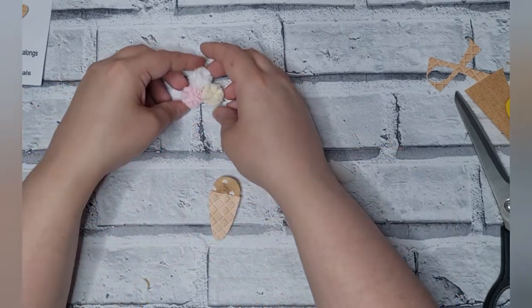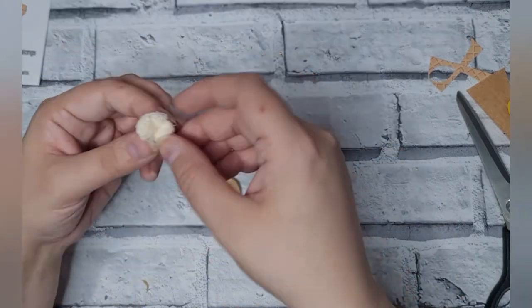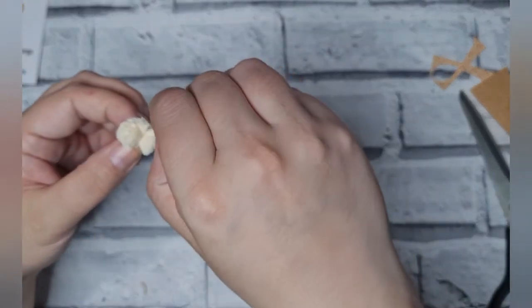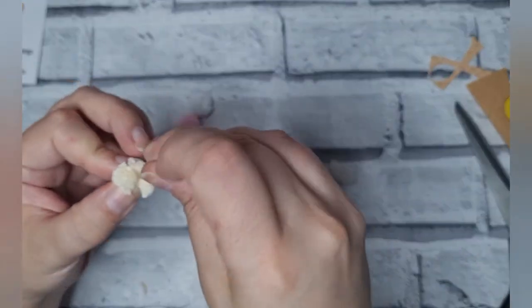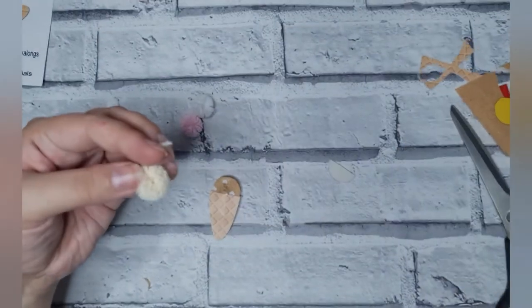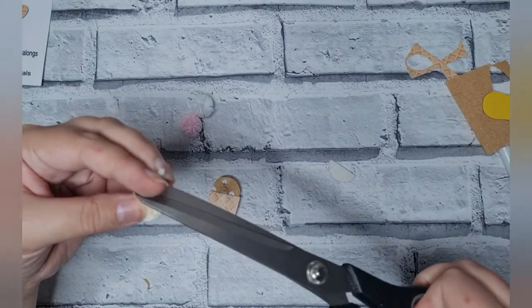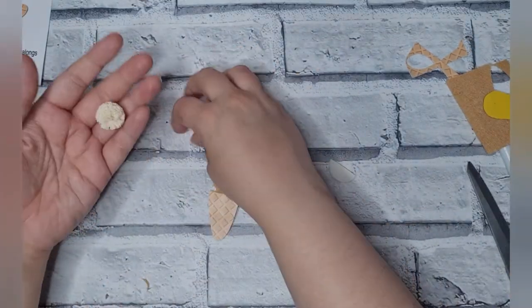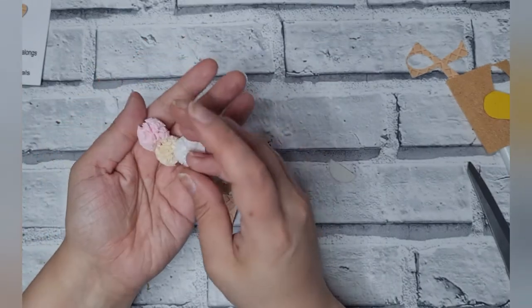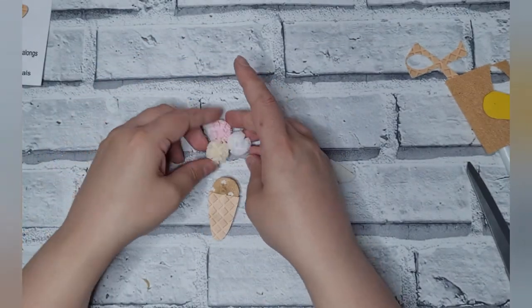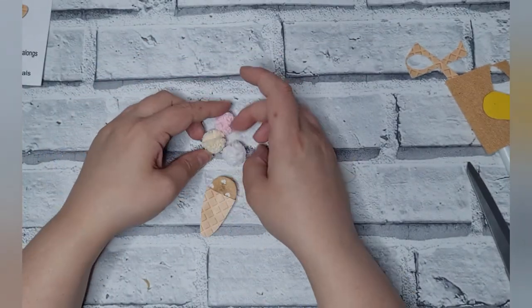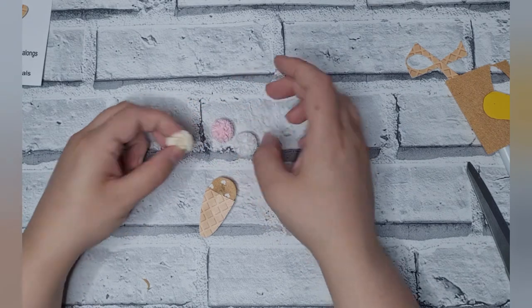This is what the back will look like, and then here we've got somewhere for our pom-poms. Now with these, you occasionally get these little strings where they've been connected, so I'm just going to pull that one loose and trim that off. I've done that on all three of them.